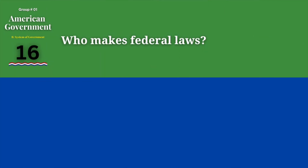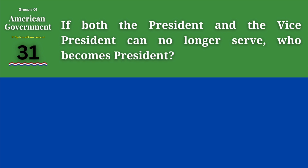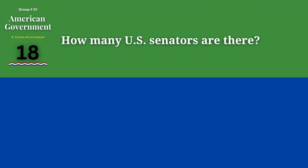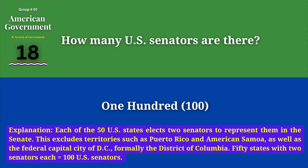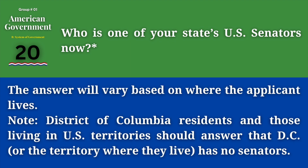Who makes federal laws? Congress. If both the President and the Vice President can no longer serve, who becomes President? The Speaker of the House. How many U.S. Senators are there? 100. Who is one of your state's U.S. Senators now? The answer will vary based on where the applicant lives. Note: District of Columbia residents and those living in U.S. territories should answer that D.C. or the territory where they live has no senators.